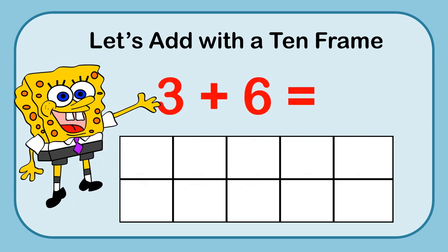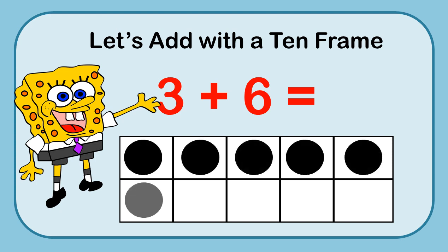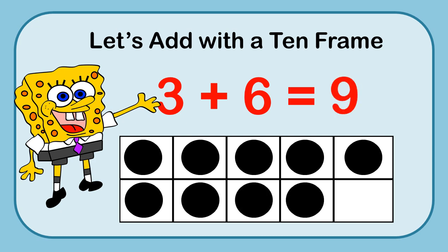Now we've got 3 plus 6. Put your 3 markers in there and 6 more: 1, 2, 3, 4, 5, 6. You should have known that, because it's missing 1 spot. I know the whole 10-frame holds 10, and since it's only missing 1, my answer would be 9.